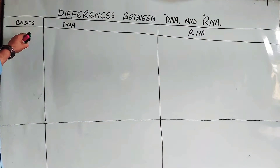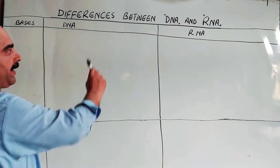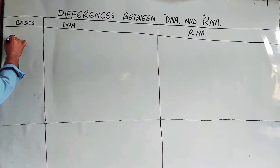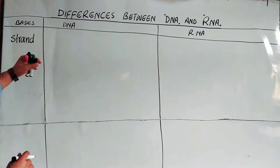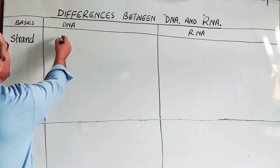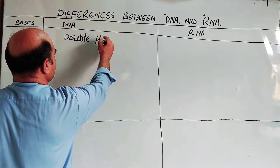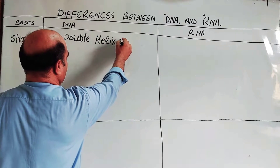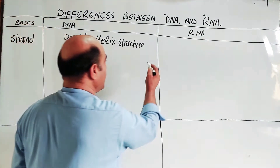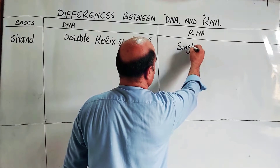The first difference is the strand. The DNA structure is a double helix — an anti-parallel double helix structure. RNA, on the other hand, is a single strand. So DNA is double helix and RNA is single strand.